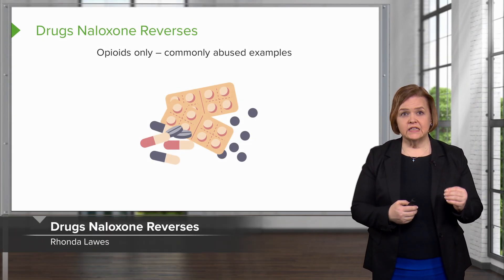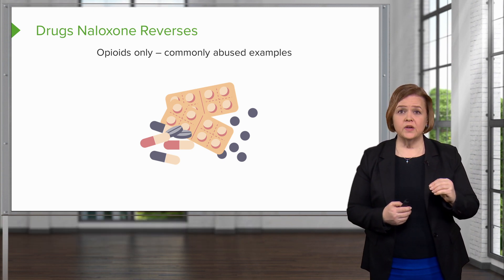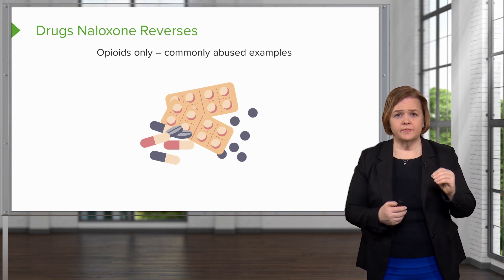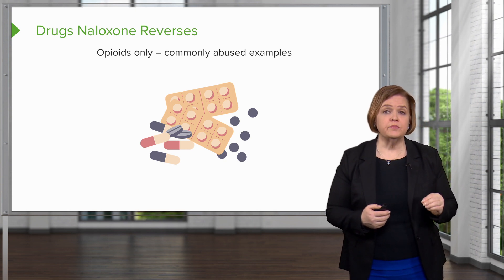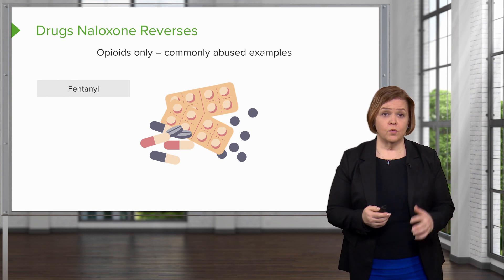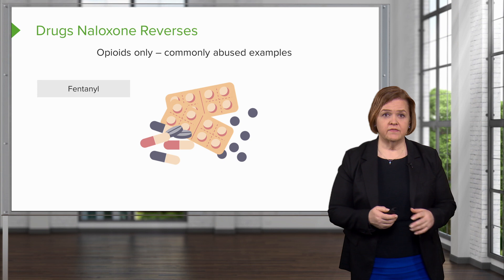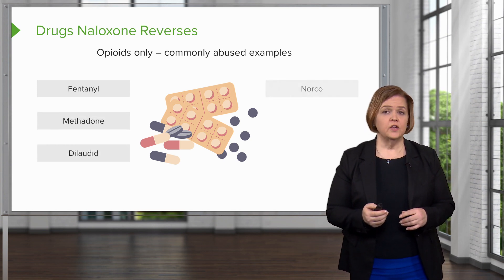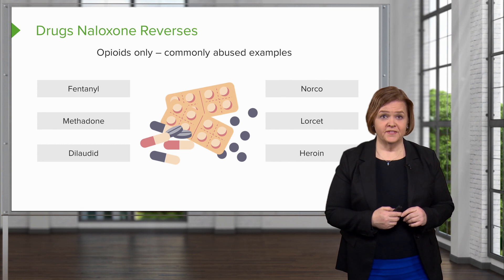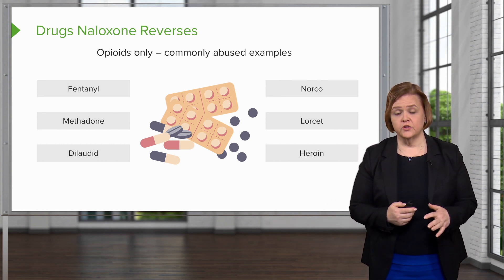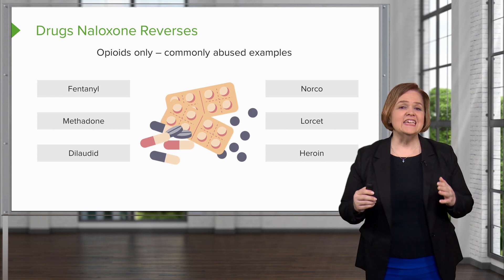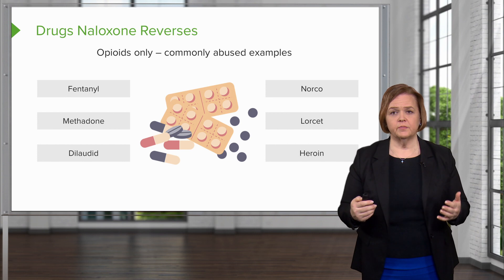Be really clear on what drugs naloxone reverses: opioids only. Naloxone is an opioid receptor antagonist. Commonly abused opioids include fentanyl — which is a hundred times more potent than morphine, a really powerful drug with high black market value — as well as methadone, Dilaudid, Norco, and Lorcet, all considered prescription drugs. Naloxone will also work on a heroin overdose, which is clearly a street drug.